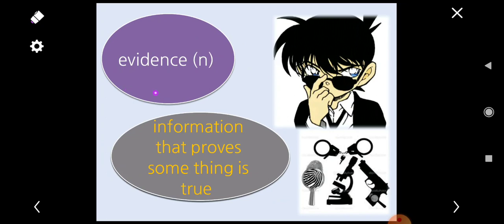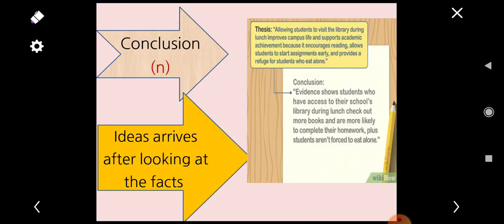Now here we have evidence. Evidence, it's a noun, and it means proof. Look to this picture. Do you know this man? This boy? He's Detective Conan. Surely we know Detective Conan. All the time he searches for evidence. He looks for proof for each crime he faces. So what we mean by evidence? Information that proves something is true.